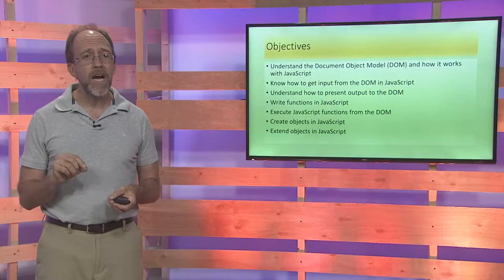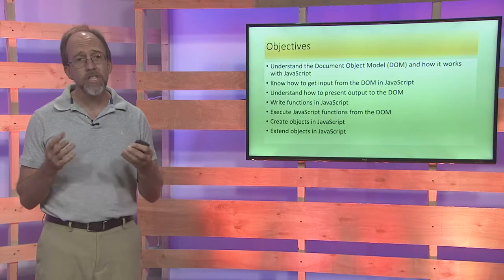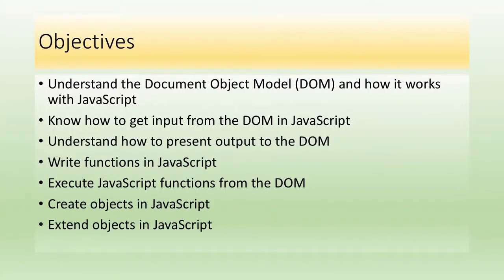We're going to first look at the concept of the document object model. JavaScript is a language that's supported by every web browser, and it was written as a true language to allow for manipulation of objects in web browsers, making it an object-oriented language that's 100% accessible to essentially everybody, because everybody has access to browsers.